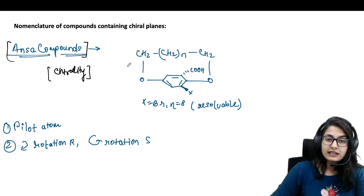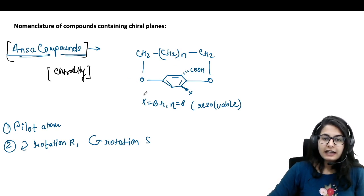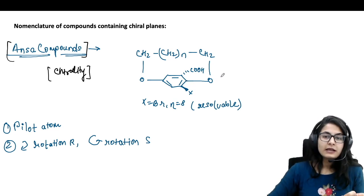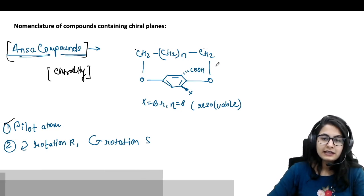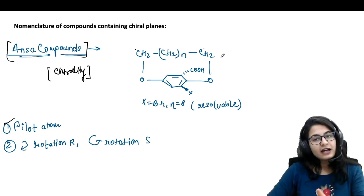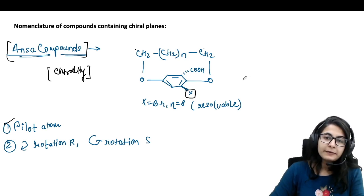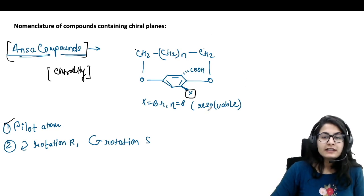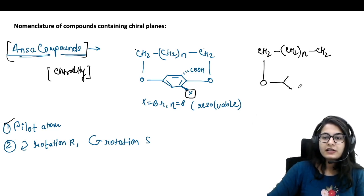For ansa compounds showing chirality due to the chiral plane — the plane containing all of these atoms is considered as the chiral plane. For the nomenclature, first skip the atoms directly connected to the benzene ring and select a pilot atom. The pilot atom is not the atoms directly connected to benzene but the atoms afterwards, on the side where there is substitution.